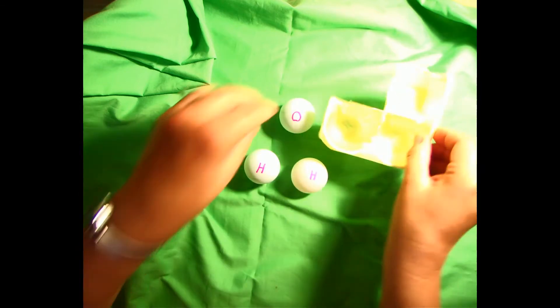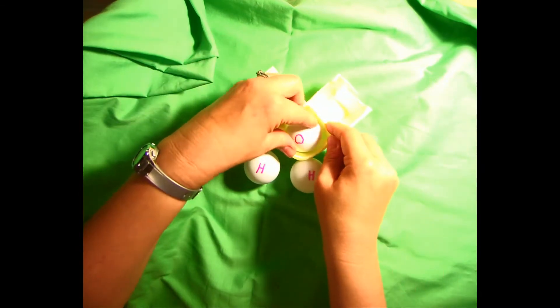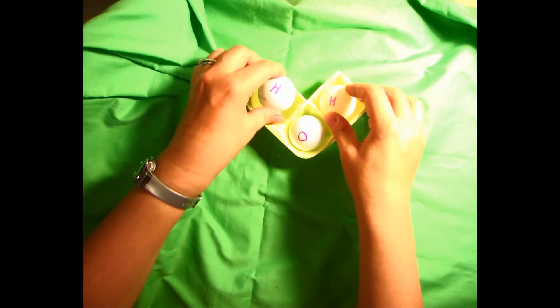When atoms join together to form a unit, that unit is called a molecule. So we have here three atoms, two hydrogens and one oxygen. When they link up, like you see in this model, they form one molecule of water.